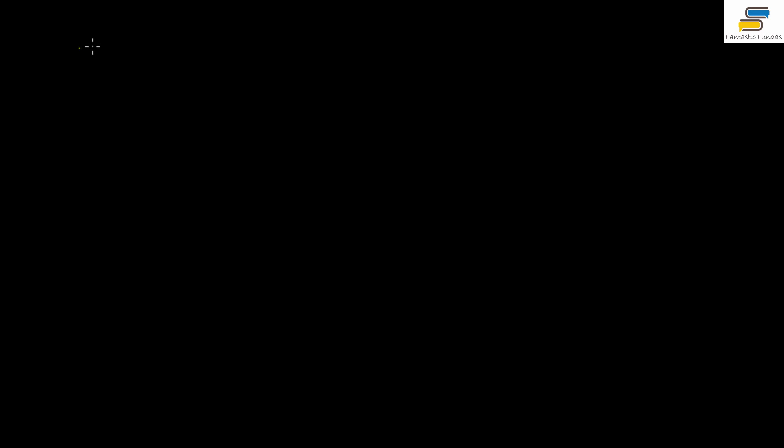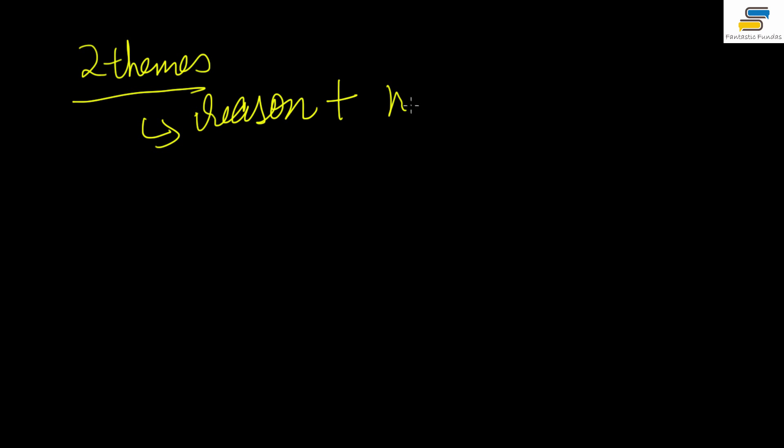Today's lecture is about general reforms. There are two underlying themes of all the religious reform movements that were happening in India. The first theme is the doctrine of reason and nationalism — all these movements had this as a common feature. The second common theme among all the social-religious reform movements is humanism.